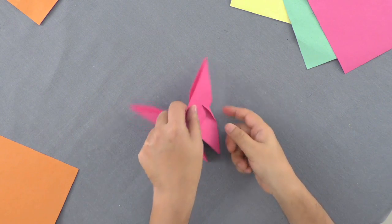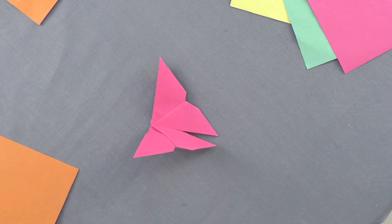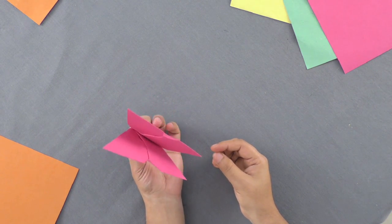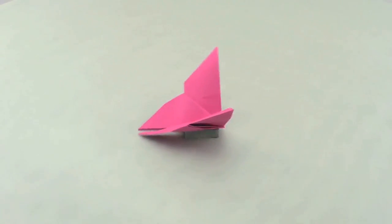Finally, turn the paper upside down. Slowly learning all these steps, you have learnt how to make an origami moth. You can try it at home.